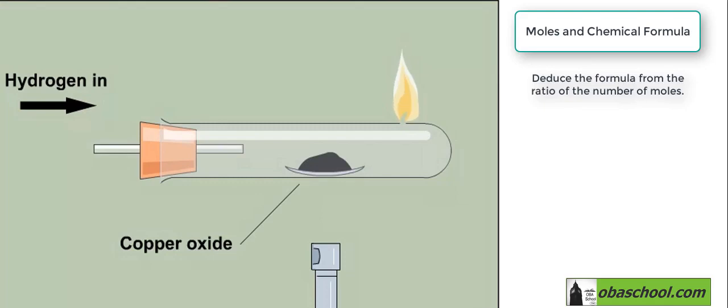Copper oxide can be reduced by hydrogen and its formula determined. To determine the formula, we need to find the masses of the copper and the oxygen present in the oxide.